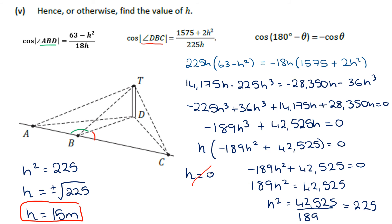Earlier in the question you could have divided across by H at that step. Normally we avoid dividing by a variable because we lose a solution, but here we're only ever going to get one valid value for H, so it would have simplified things slightly.